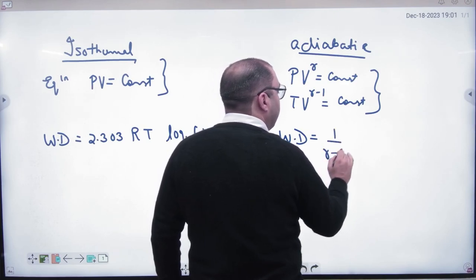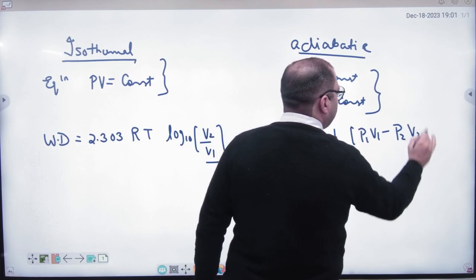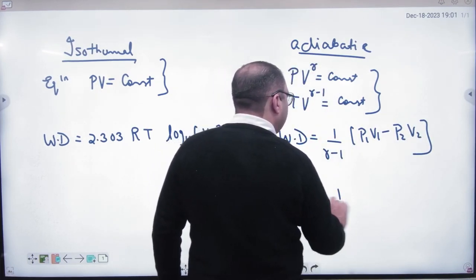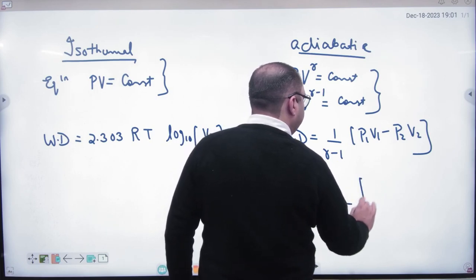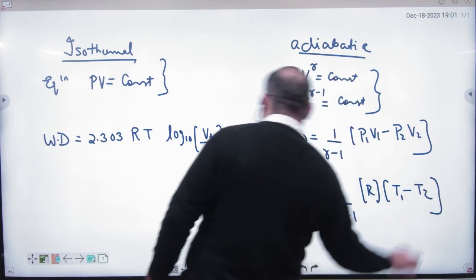1 by gamma minus 1, P1V1 minus P2V2. Or, the work done formula: 1 by gamma minus 1, R into T1 minus T2 for 1 mole.